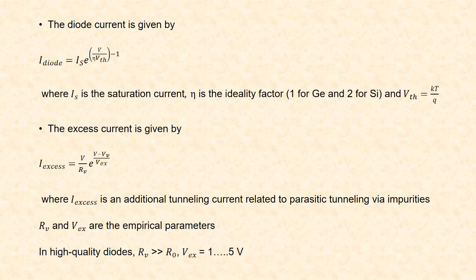Rv and Vx are empirical parameters. In high quality diodes, Rv value will be much greater than R0. Vx can have a value from 1 to 5 volt.